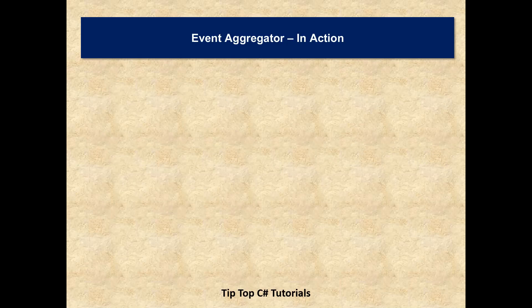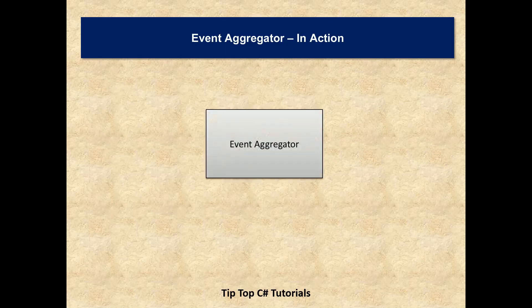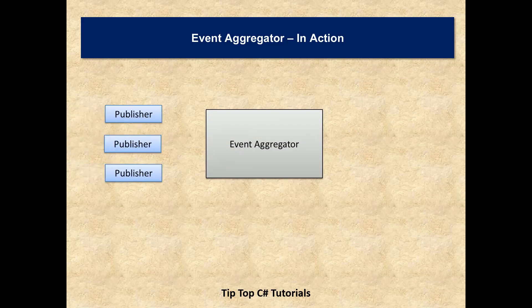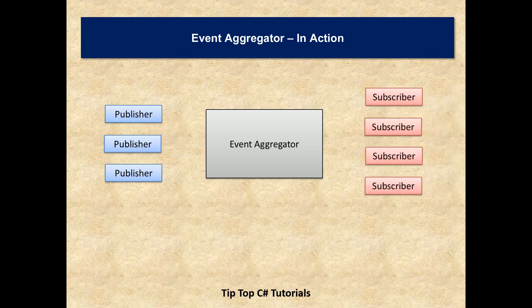Let's see it in action so that we get a better understanding of how Event Aggregator works. This is the central registry part. We have publishers — which are the source of events — on one hand, and subscribers — which handle the events — on the other. Publishers raise events to the Event Aggregator, and the Event Aggregator maps them to the respective subscriber, where each subscriber has a handler to receive and handle the event.